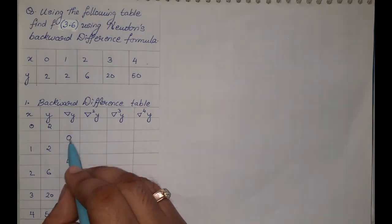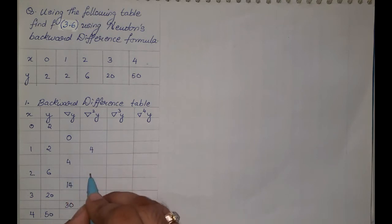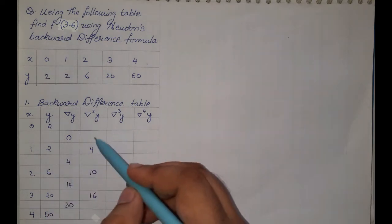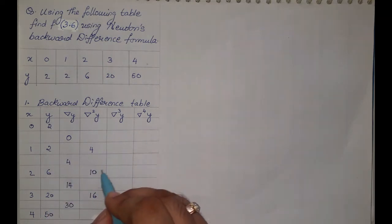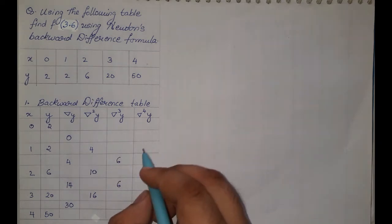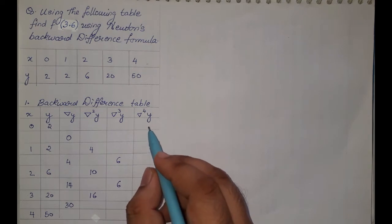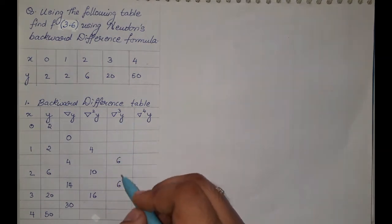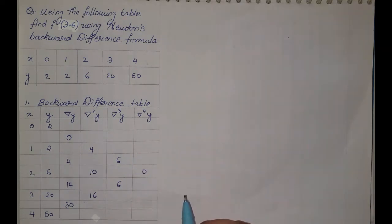For the second backward difference, we find the difference of the first backward differences: 4 minus 0 is 4, 14 minus 4 is 10, and 30 minus 14 is 16. For the third backward difference: 10 minus 4 is 6, and 16 minus 10 is 6. For the fourth backward difference: 6 minus 6 is 0. This is how we create the backward difference table, which will always taper to a single point.